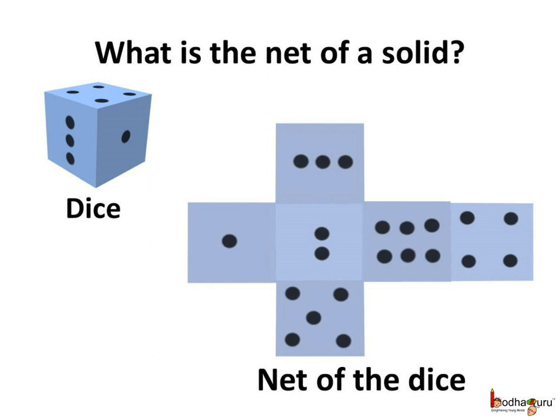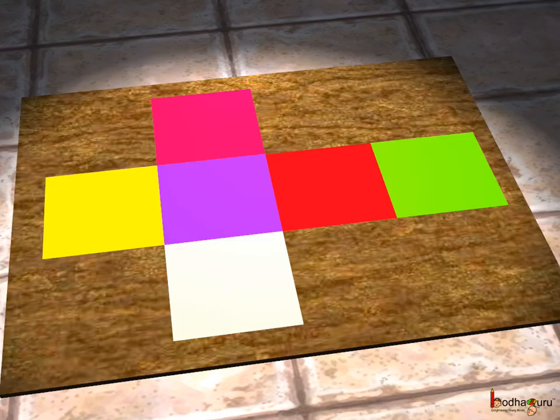See, all the six faces of the unfolded dice can be seen here. So this is the net of the dice. This is the net of the cube.